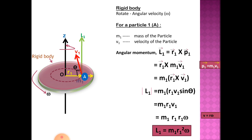Then you write the cross product of r1 cross v1. So L1 is equal to m1 r1 v1 sin theta. Here theta is the angle between r and P vectors.